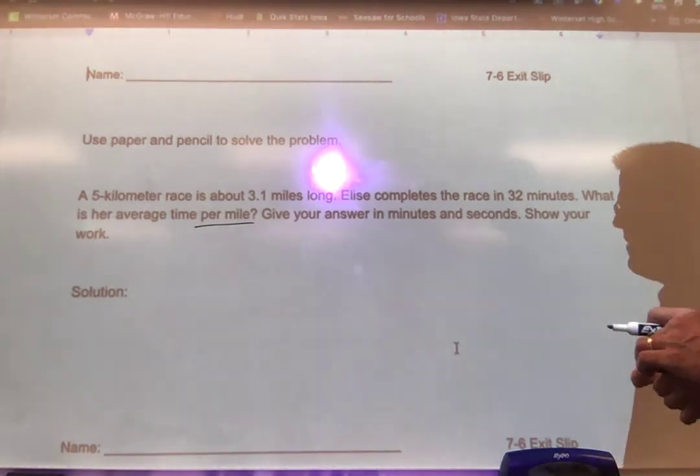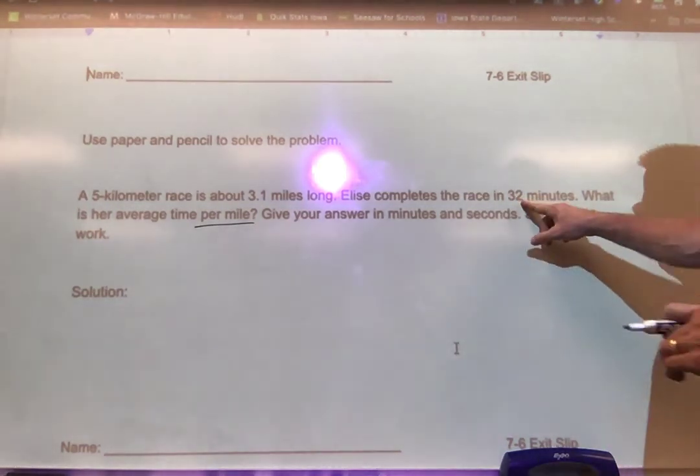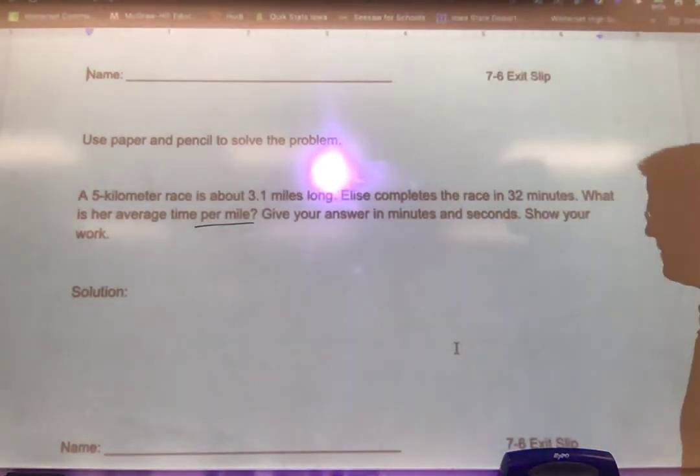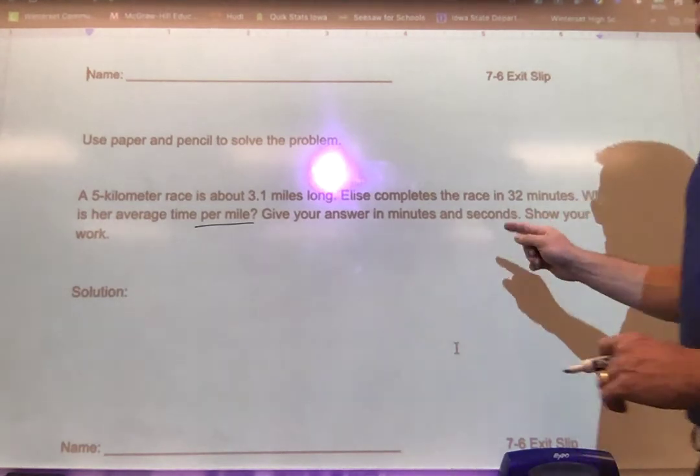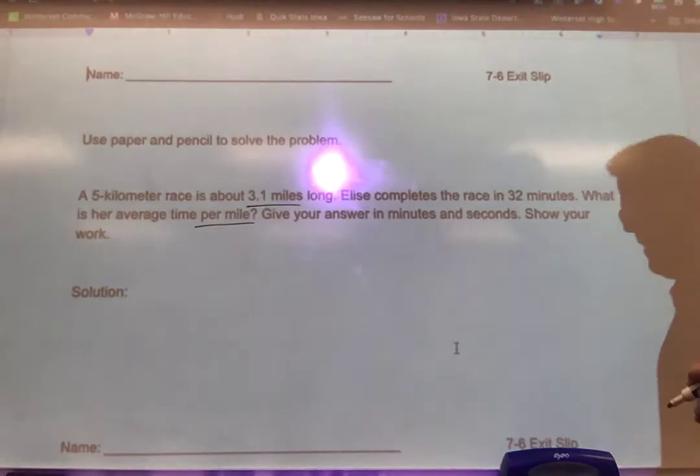So we know what we're comparing here is a 5 kilometer race is 3.1 miles and she completes the race in 32 minutes. I'm not worried that it's a 5 kilometer race, that's just telling me how long it is. They asked me to get a time per mile, so I really just need to focus on her time per mile.